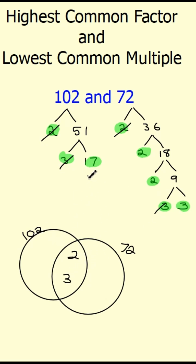Anything left over goes on the outside. So 102 also has 17, and two 2s and a 3 for 72.